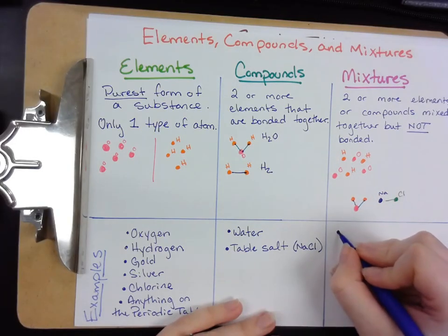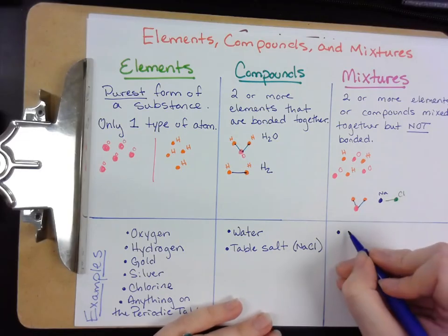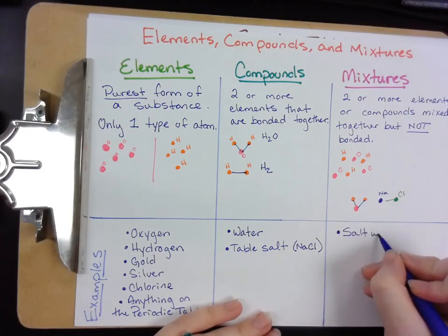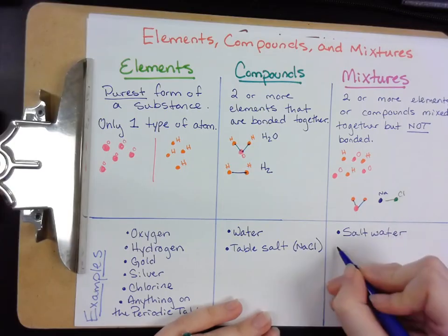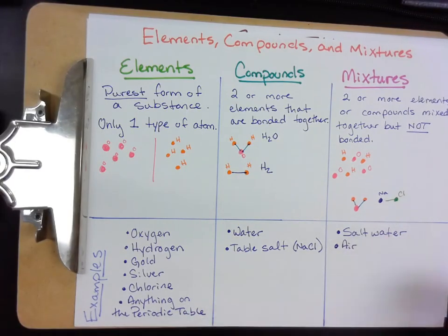So some examples of mixtures would be things like salt water, a mixture of salt and water. Another one is air. So the air you breathe every day is a mixture of different elements. It's got oxygen, nitrogen, argon all floating around but they're not bonded together. So that would be a mixture rather than a compound.